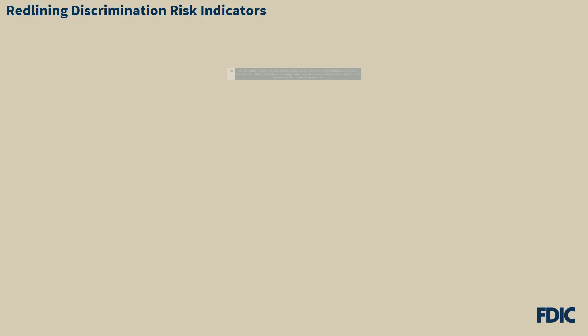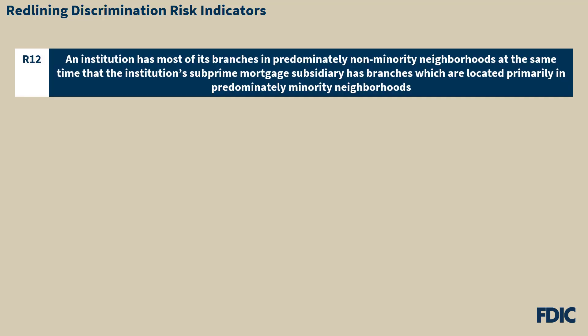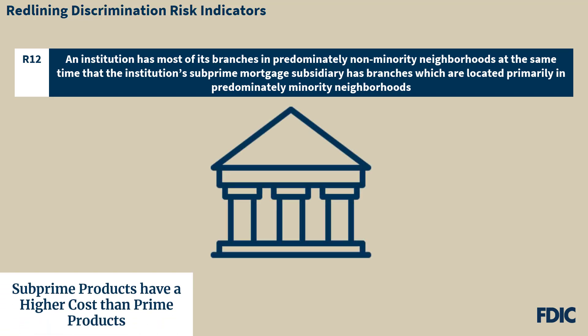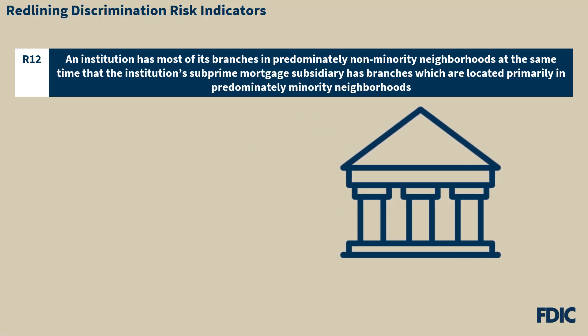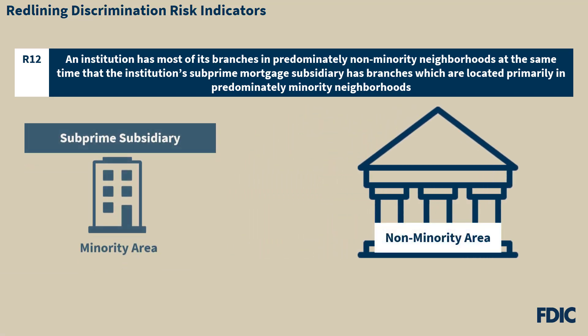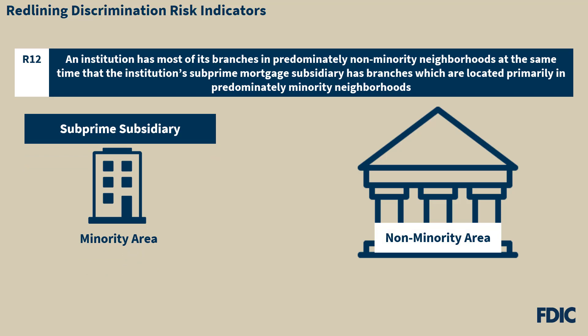The final risk indicator discussed in the interagency procedures is R12, which arises where an institution has most of its branches in predominantly non-minority neighborhoods at the same time that the institution's subprime mortgage subsidiary has branches located primarily in predominantly minority neighborhoods. Subprime products generally have higher costs than prime products. If the branches in majority-minority areas tend to be branches of a subsidiary that offer subprime products rather than bank branches that offer prime products, there is a concern that residents of majority-minority areas are not being given equal access to less costly loan products.